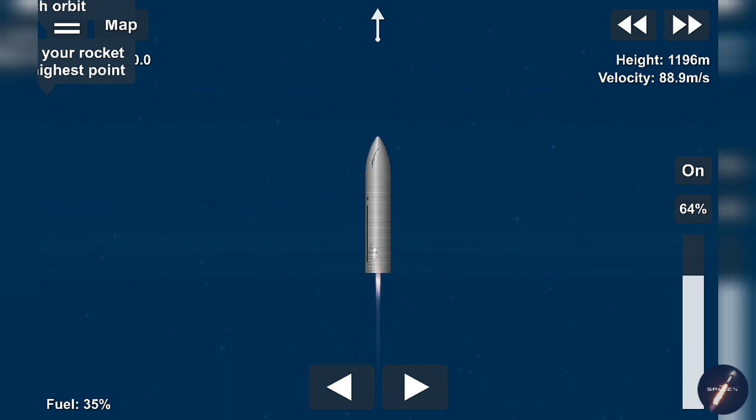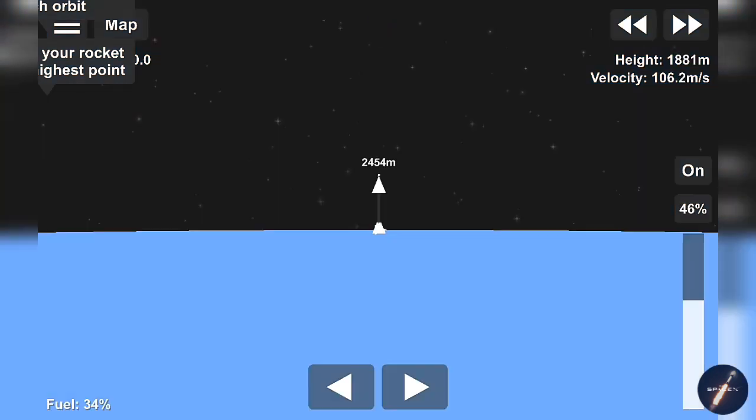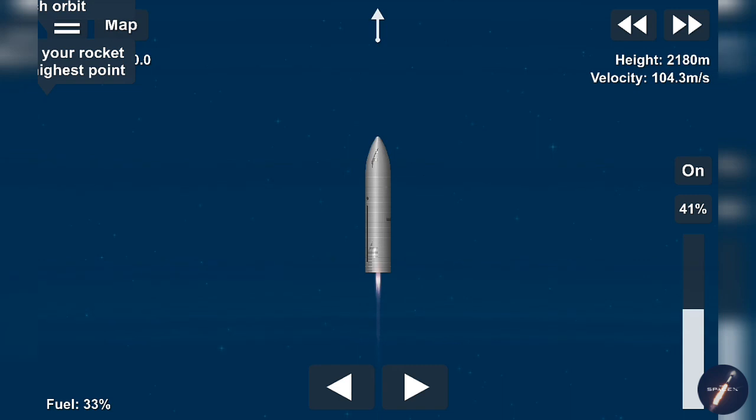T plus 30 seconds. All three Raptor engines at full power. Starship climbing to 10 km altitude. The view on the right shows three Raptor engines burning. Everything continues to look nominal right now for the stage propulsion.